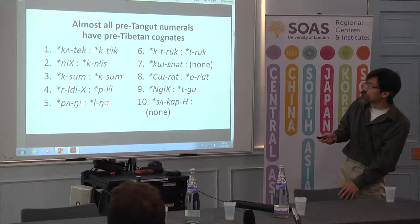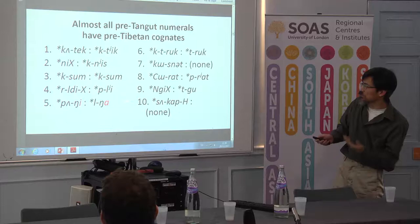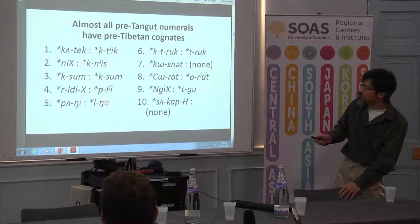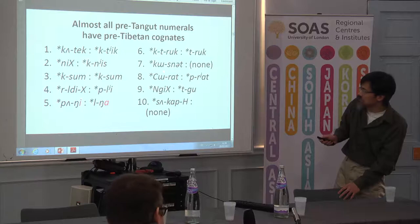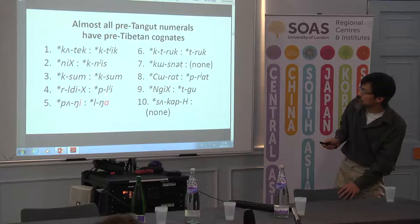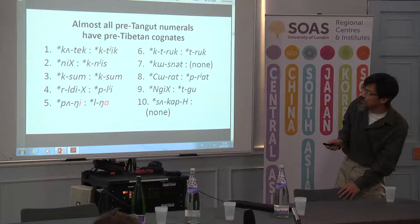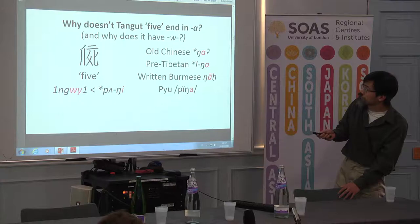If you trace back the history of the Tibetan numerals — which I did with Nathan's help — and trace back the earlier forms of the Tangut numerals using a system I published five years ago, you can see that most of these, except for seven and ten which are completely unrelated, are actually cognates. The resemblances are pretty good in most cases, except five is still a problem. Even if you go back in time, you still end up with very different vowels — an E and an A. Assuming these are really cognates, and I'm pretty sure they are, why does the Tangut five end in A, and why does it have a medial W?